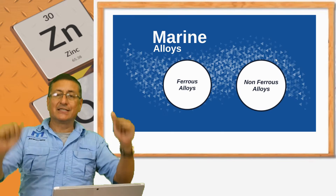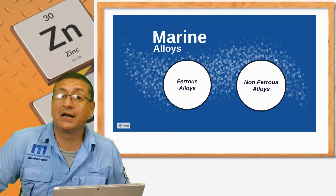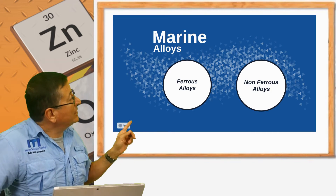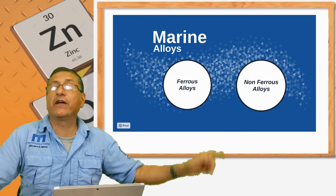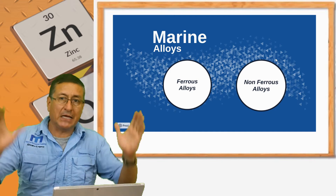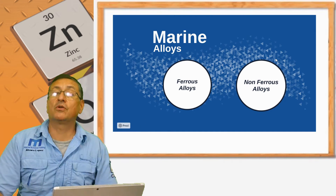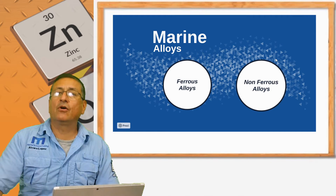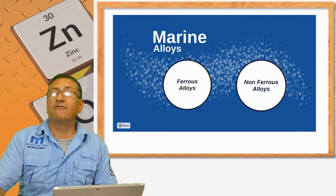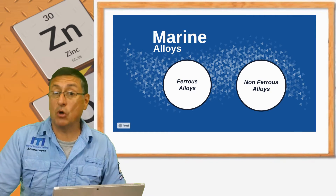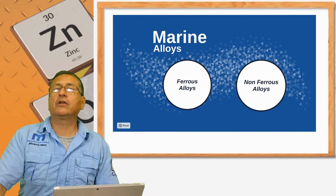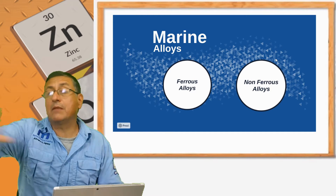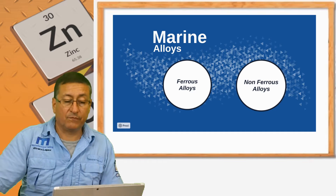The marine alloys are divided into ferrous alloys and non-ferrous alloys. That's the main division — you remember at the beginning of our course on corrosion. Those alloys are divided into ferrous alloys, alloys based on iron, and non-ferrous alloys, alloys based on metals other than iron.